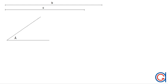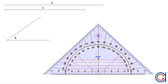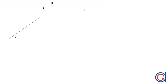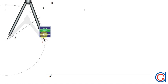Hello, today we are going to learn how to draw a scalene triangle given one angle and its two adjacent sides. As can be seen here on the screen, the first step is we draw a horizontal line at the bottom of the screen, and on the left side of this line we will locate a point which we will call A.